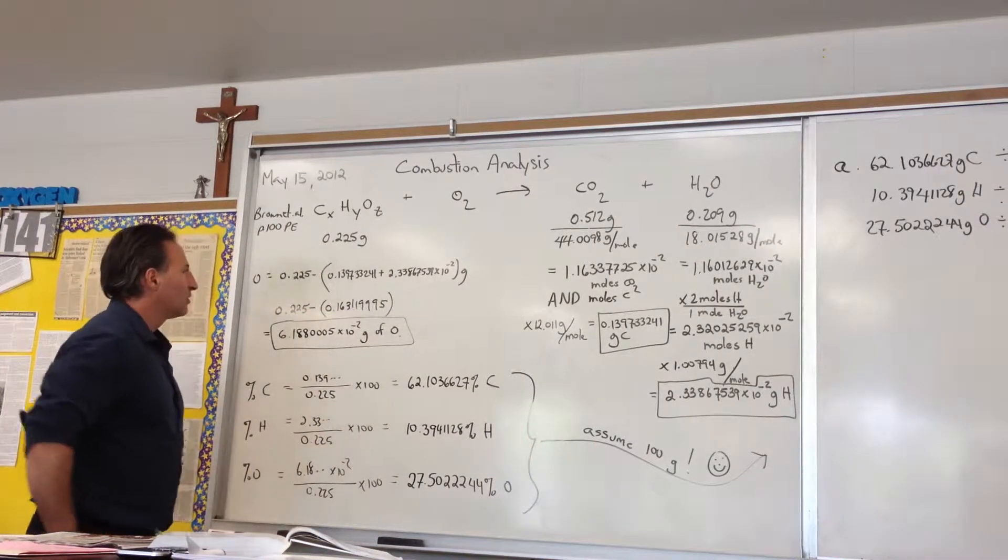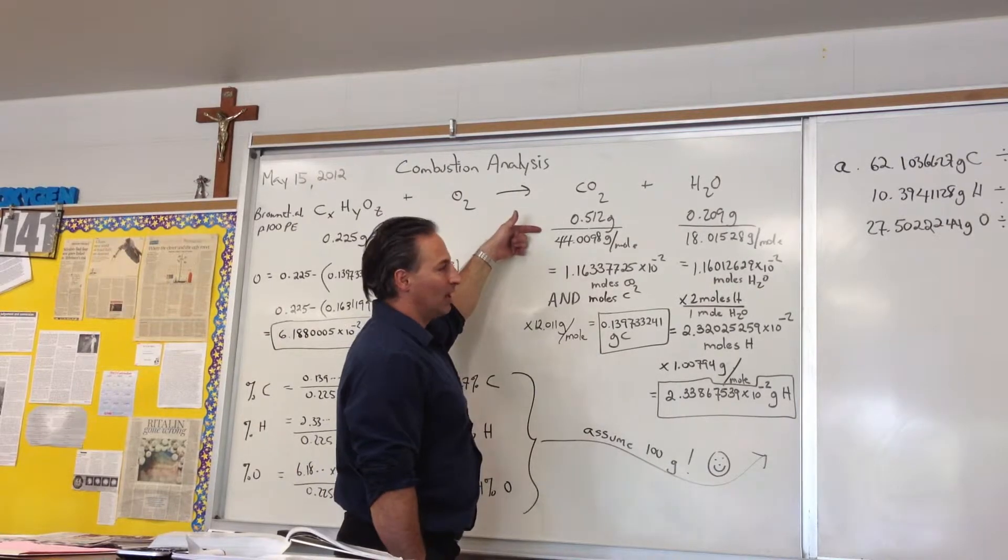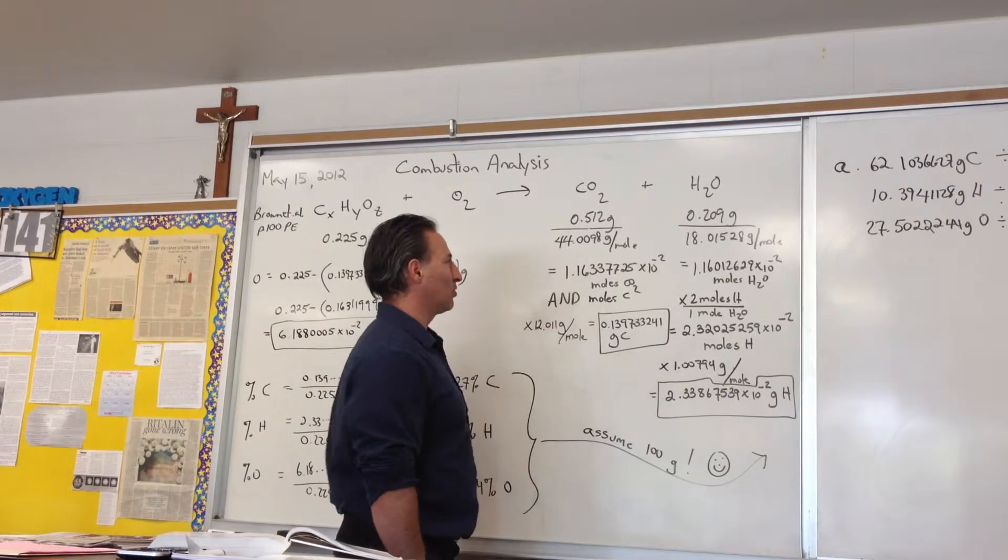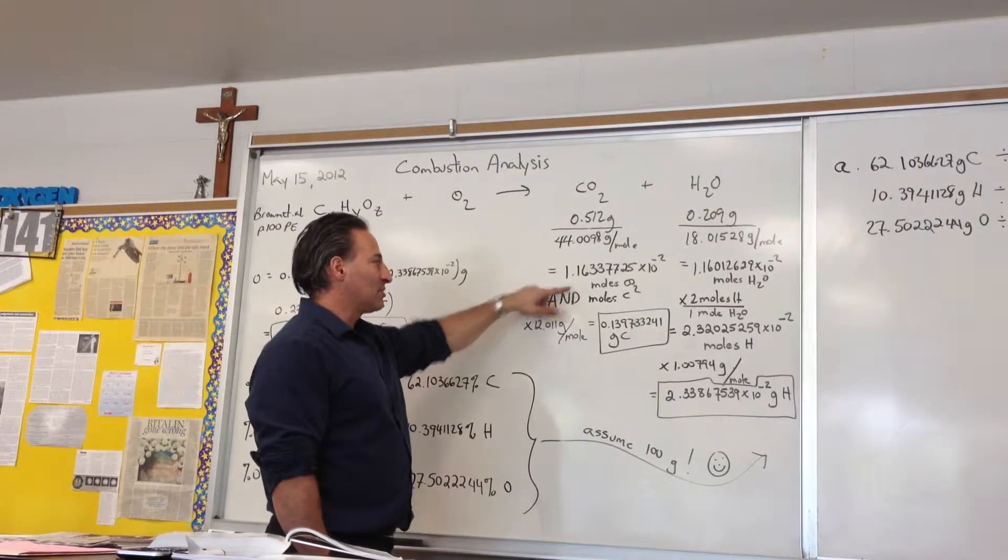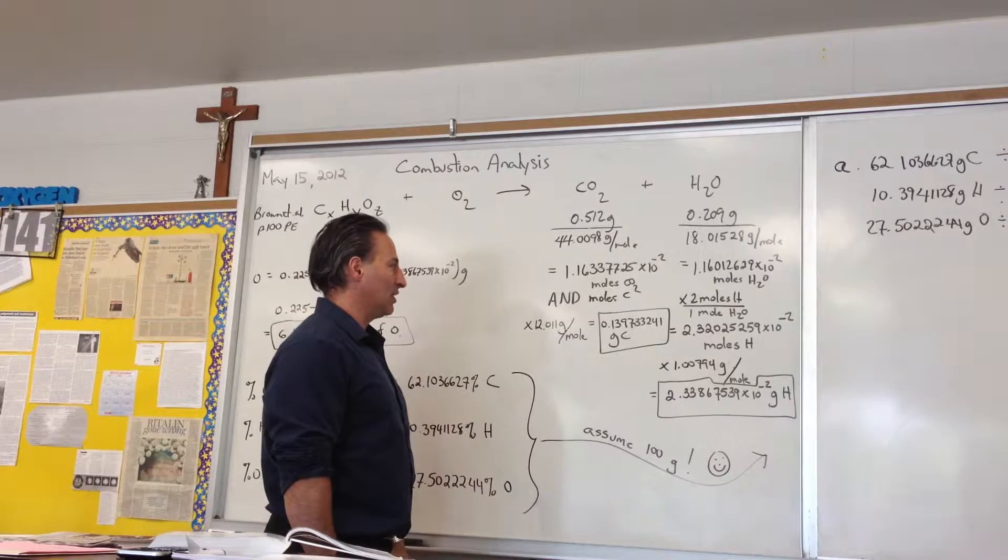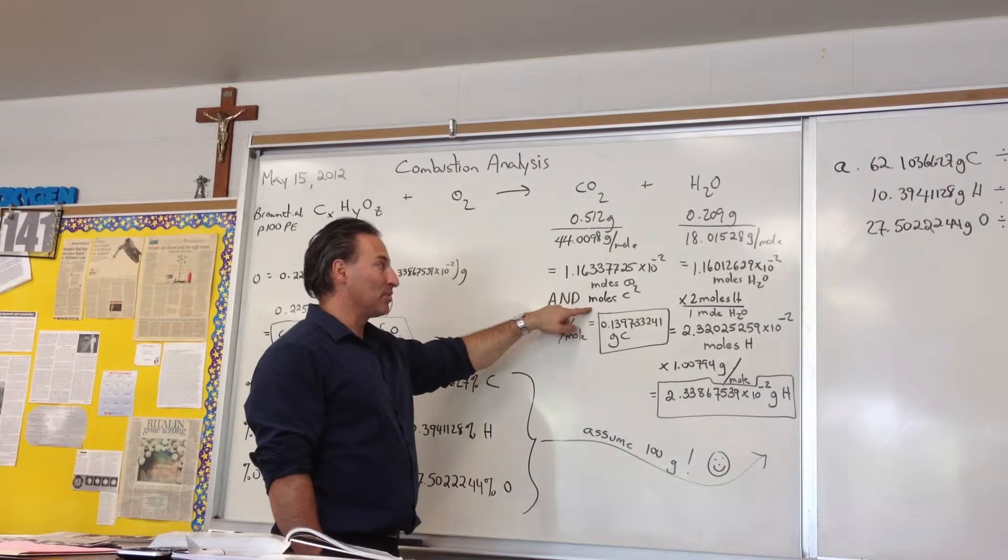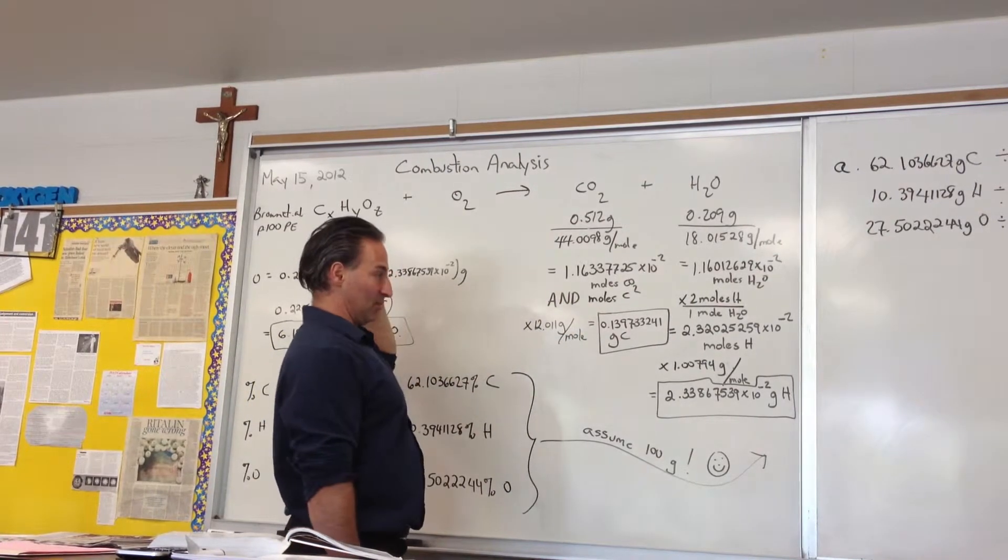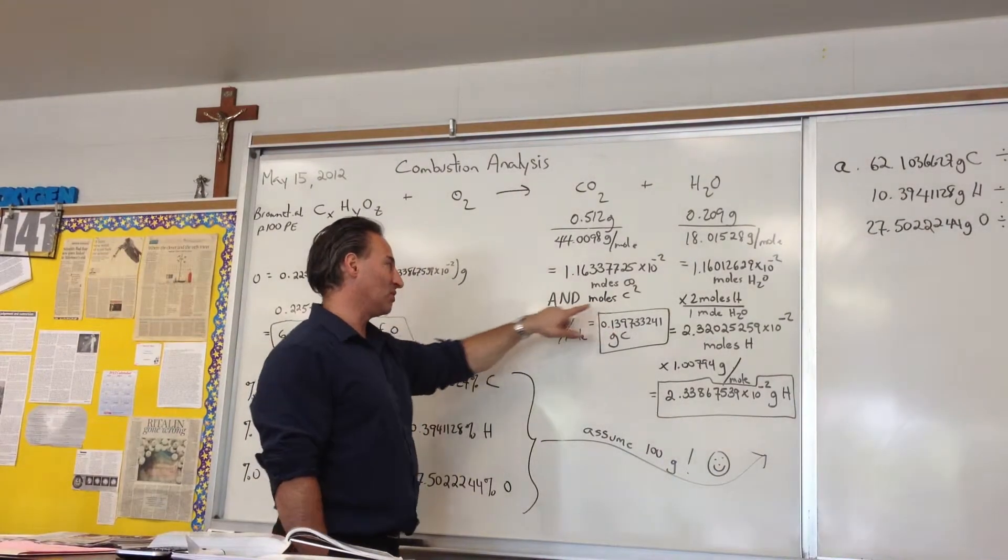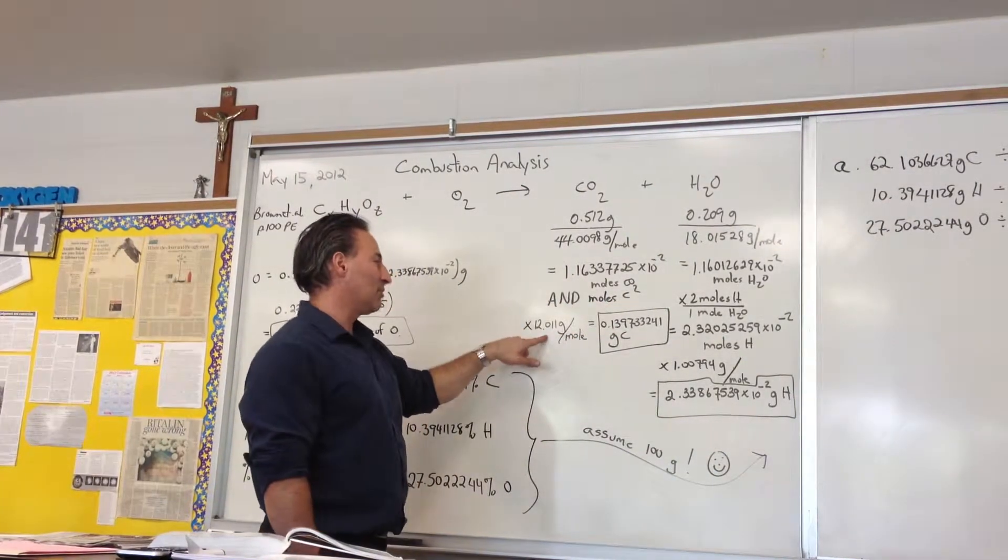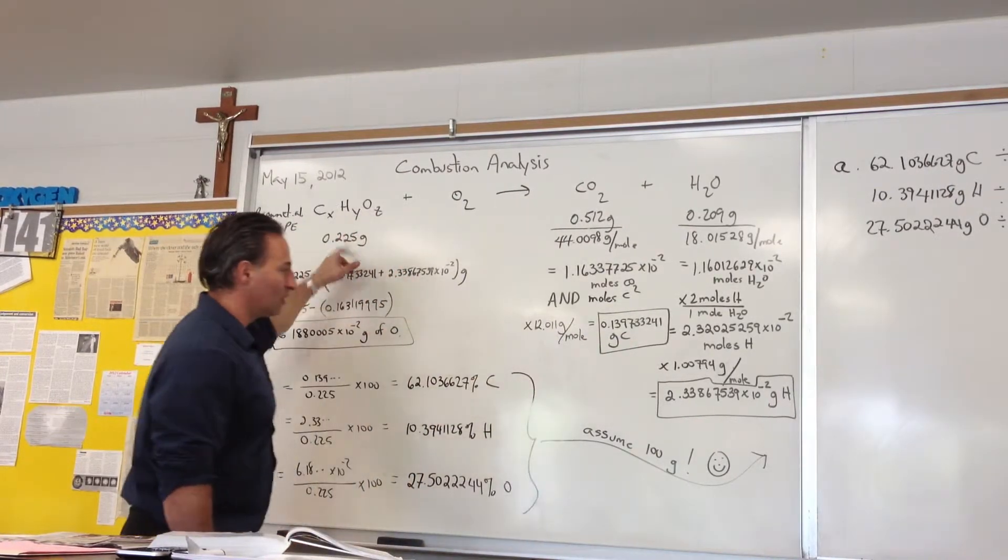The first step is to find how many moles of CO2 we have. Dividing by the molar mass of carbon dioxide, 44.0098, we get 1.16 × 10⁻² moles of CO2. This means we have the same number of moles of carbon from the unknown compound. Multiplying by the molar mass of carbon gives us the grams of carbon in the original compound.